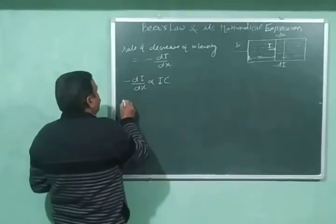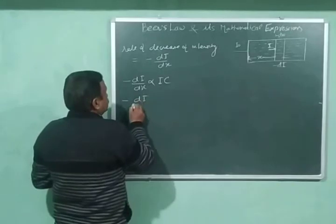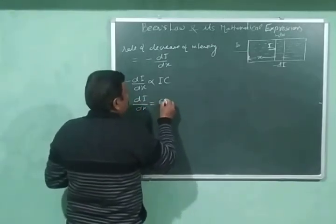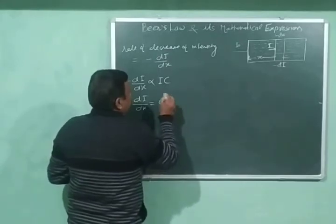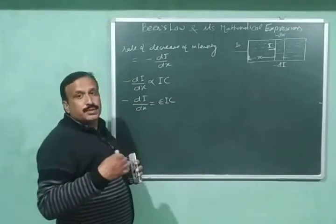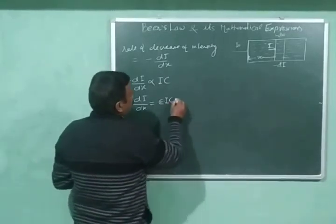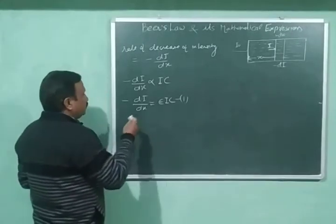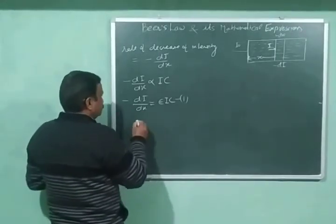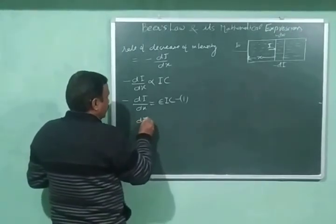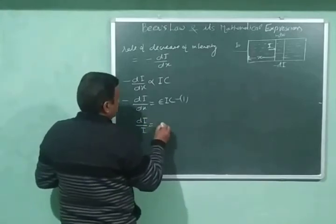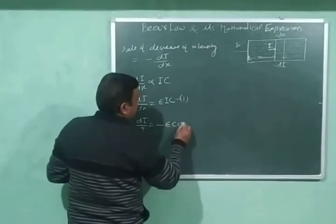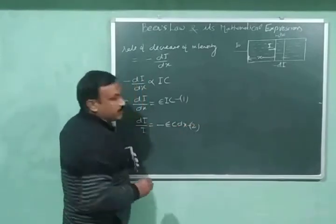This equation can be written as: −dI/dx = εIC, where ε is a proportionality constant. This is equation number 1. Rearranging, we get: dI/I = −εC·dx. This is equation number 2.